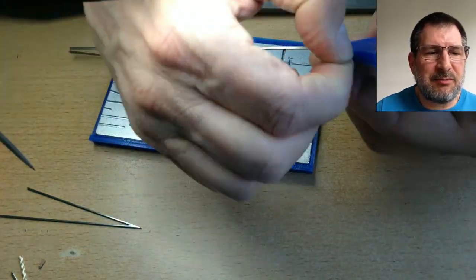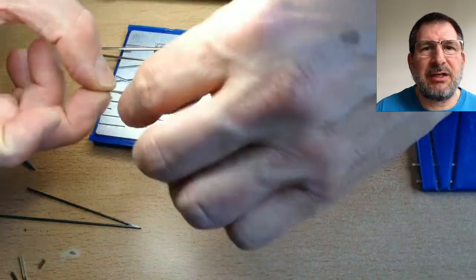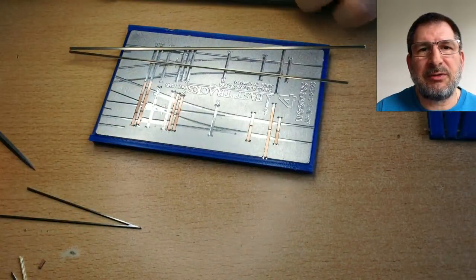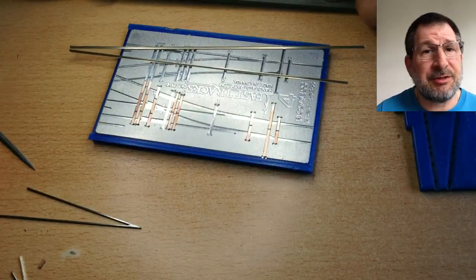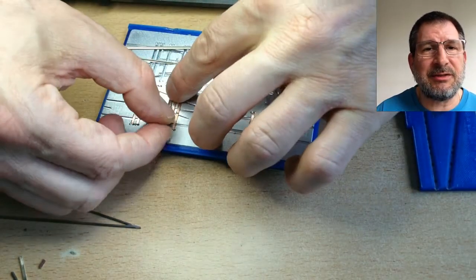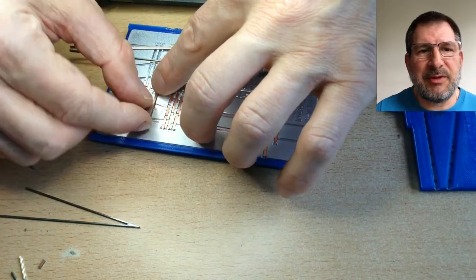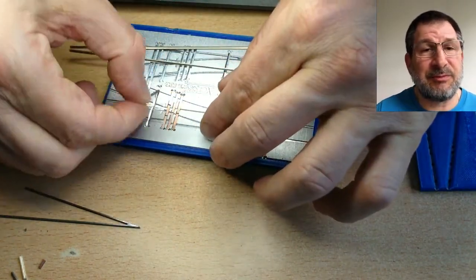You can check them for short real fast using a multimeter. You set it to continuity and put a probe on each half of the gap, and it should not make any noise. If it makes a noise, there's electrical flow between the two halves across the gap, and you don't have a real gap.